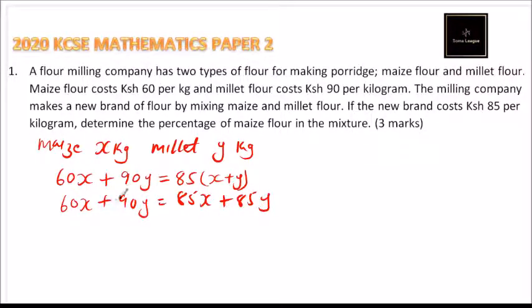You take like terms together, so we take X to this side and 85Y to this side. So we have 90Y minus 85Y is equal to 85X minus 60X.